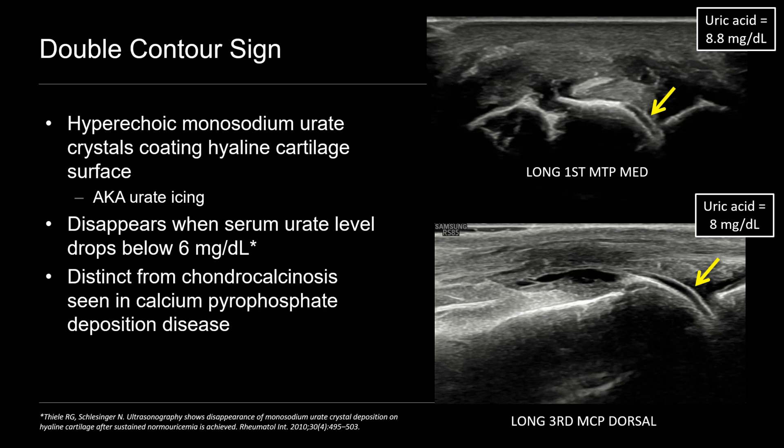This is also distinct from chondrocalcinosis, which we see in calcium pyrophosphate deposition disease — CPPD arthropathy. In that case, you'll see echogenic crystals within the cartilage, within the anechoic hyaline cartilage, as opposed to on the surface. So you can differentiate the two on ultrasound.